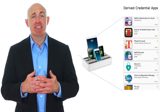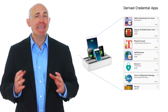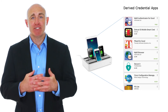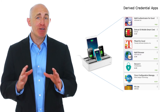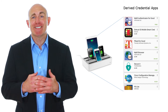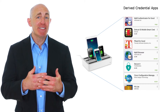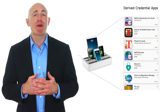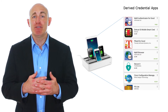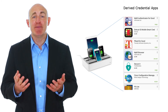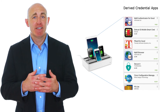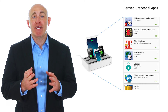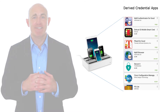dbSign derived signatures are completely interoperable with the derived PIV credentials, so users can use their mobile devices to sign web-based documents and data. But the dbSign derived signature solution is not limited to derived PIV credentials — other commercial means of authentication can be used as well.